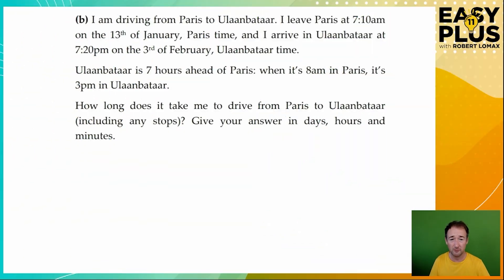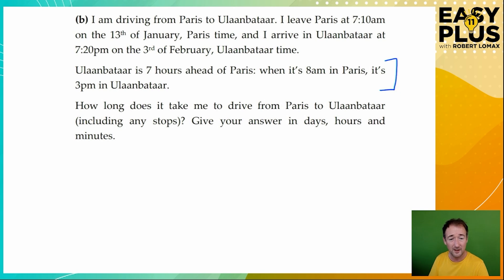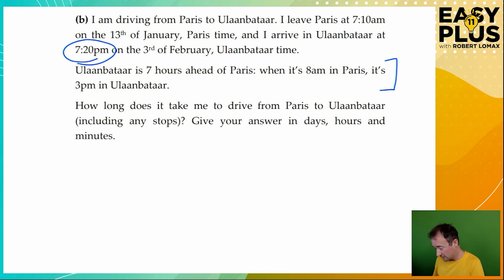Here we've got a question about driving from Paris in France to Ulaanbaatar in Mongolia, which is quite a long way. As we can see, there's a difference in time zones. We can't work out the time this takes if we're working with two times that belong to different time zones. Instead, it makes sense to start by putting the times in the same form — either Paris time or Ulaanbaatar time. Let's deal with Paris time so that we're still leaving at 7:10 a.m. In that case, the 7:20 p.m. arrival time in Ulaanbaatar needs to be adjusted.